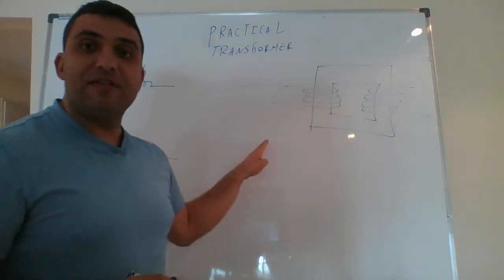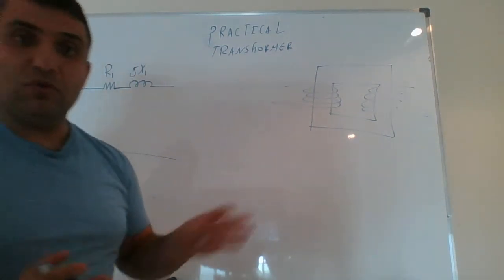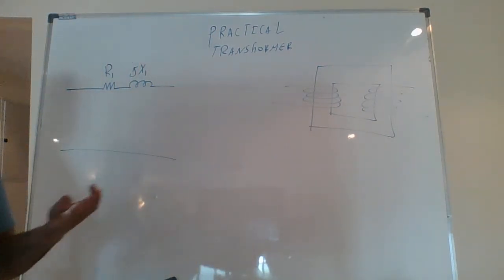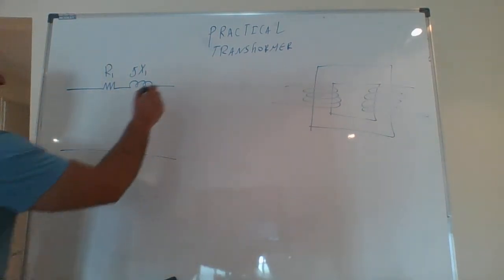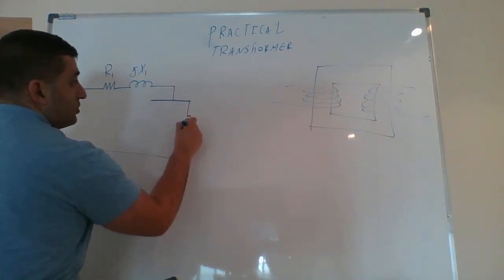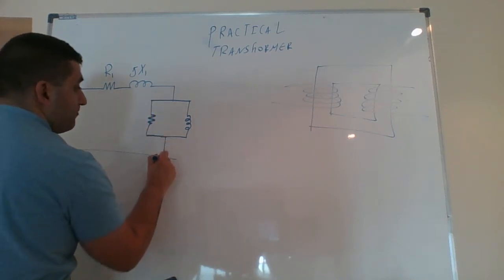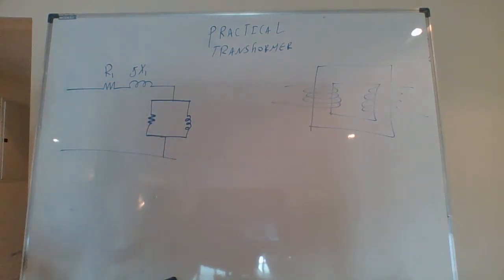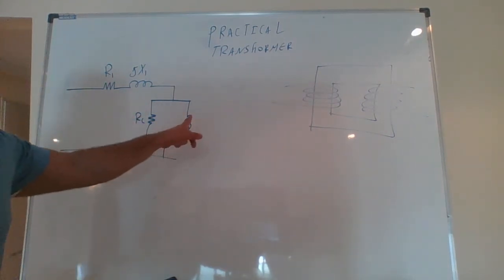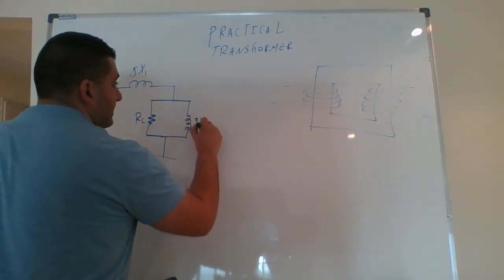We also have core losses, which are represented by real and reactive losses. These can be represented by a shunt branch: I call the resistive part R_core, representing real losses, and the magnetizing reactance jX_M, representing reactive losses.